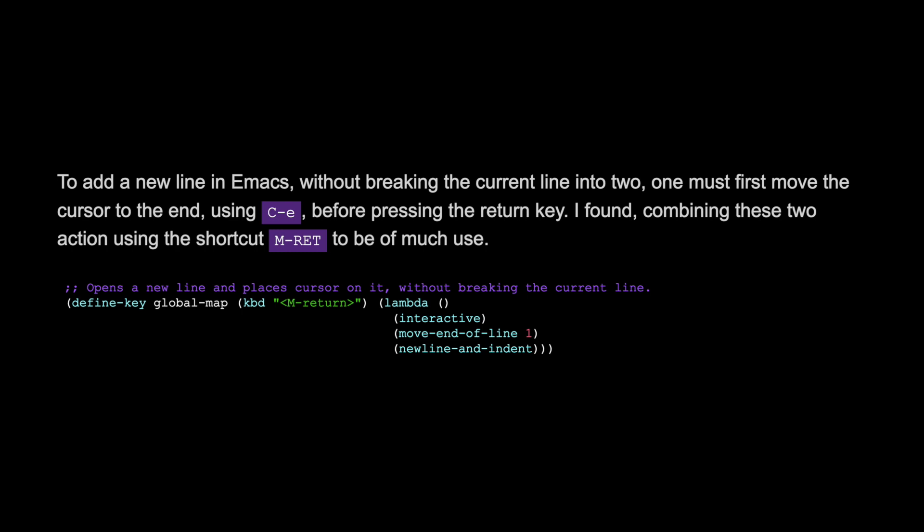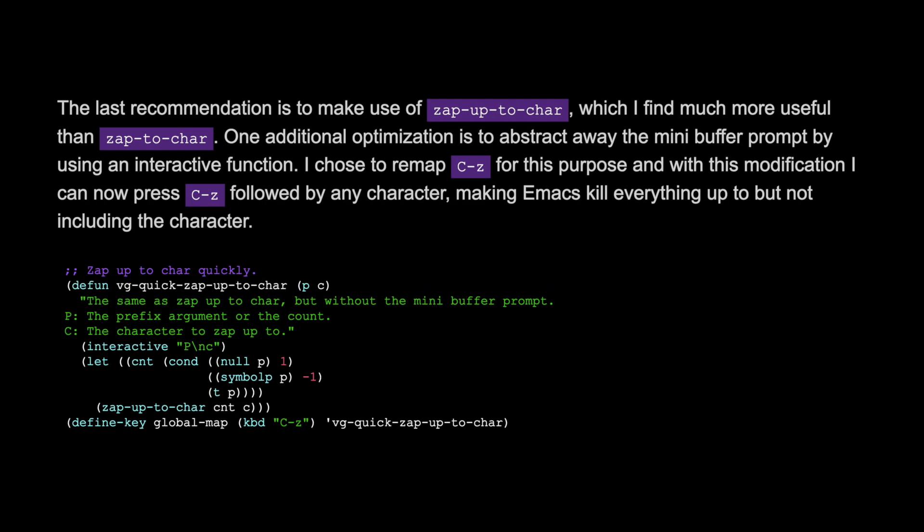To add a new line in Emacs without breaking the current line into two, one must first move the cursor to the end using Ctrl+E before pressing the Return key. I found combining these two actions using the shortcut Meta+Return to be very useful. The last recommendation is to use zap-up-to-char, which I find much more useful than zap-to-char. One additional optimization is to abstract away the mini-buffer prompt using an interactive function. I remapped Ctrl+Z for this purpose — pressing Ctrl+Z followed by any character makes Emacs kill everything up to but not including that character.